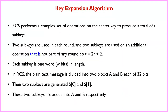RC5 uses a set of complex operations. Two sub-keys are used in each round, and two additional sub-keys are used in an operation that is not part of any round. The total number of sub-keys is 2R + 2.